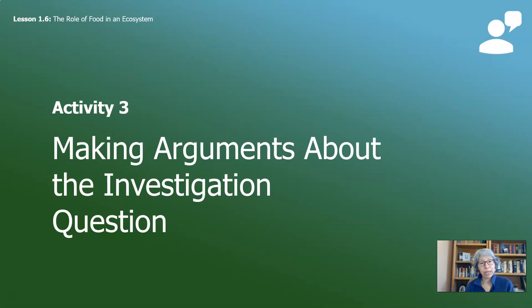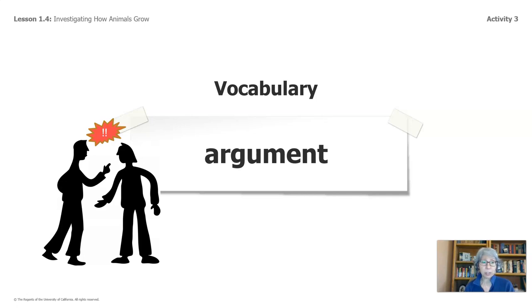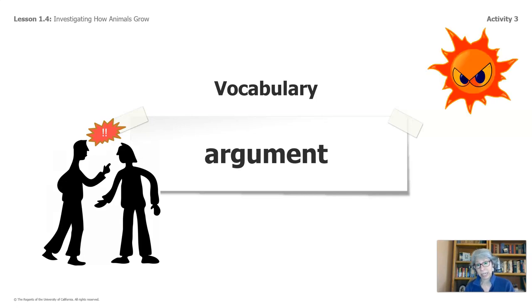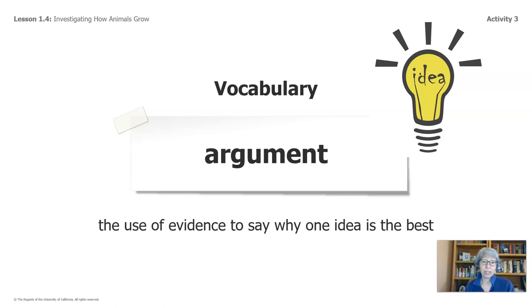This is our last activity in this video: making arguments about the investigation question. Let's pause and think about this word, argument. Scientists use the word argument in a very different way than maybe we're familiar with. It is not engaging in a disagreement and it certainly isn't about fighting. A scientific argument means the use of evidence to say why one idea is the best idea. That's how scientists use the word argument. You have to know what your evidence is, and it has to support your idea, and it has to be the best idea.